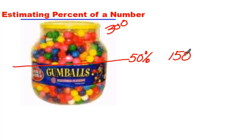Now what if I said 10%? You may have 10% of the gumballs. Remember 10% means one tenth. So you would have about this many gumballs. 10% of 300 would be 30.